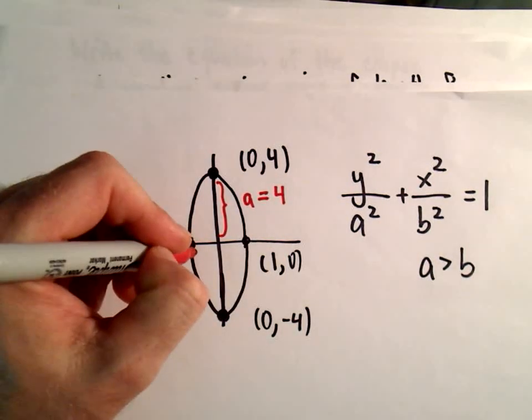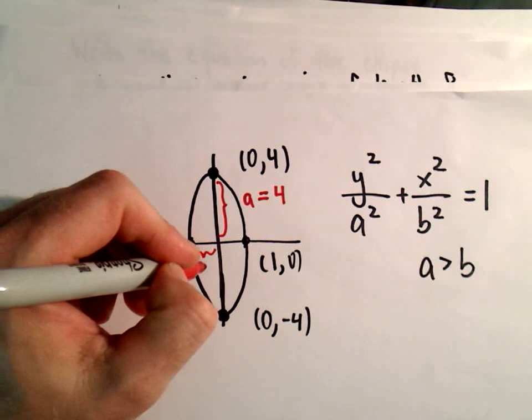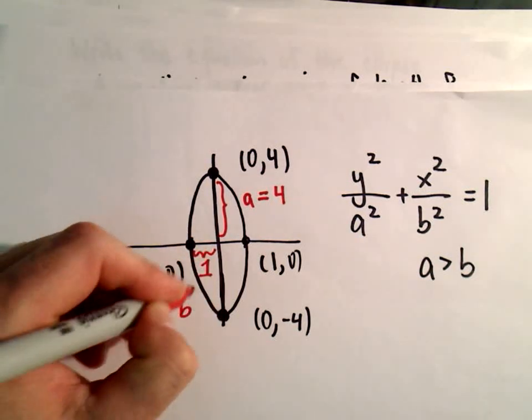And our b value is going to be the distance from where it's centered, which again is at the origin, to one of our co-vertices. So in this case that has a length of 1, and that's going to be our b value.